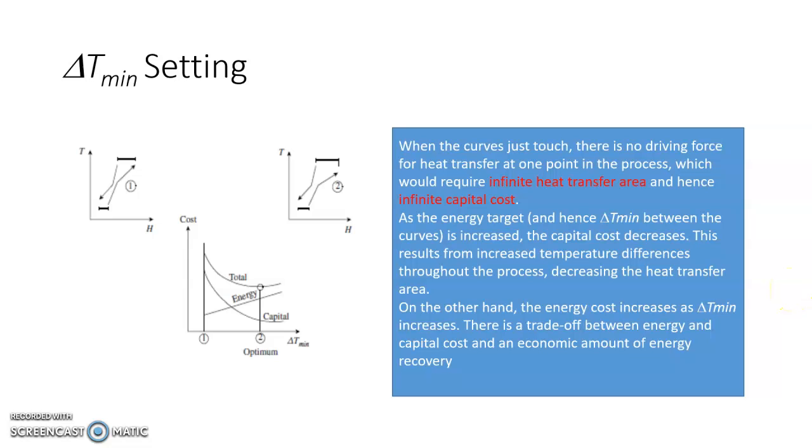So hello friends. In our previous class, we had seen that when we have multiple streams and when we plot composite curves for multiple streams, we can find out the delta T minimum and corresponding hot and cold utility.